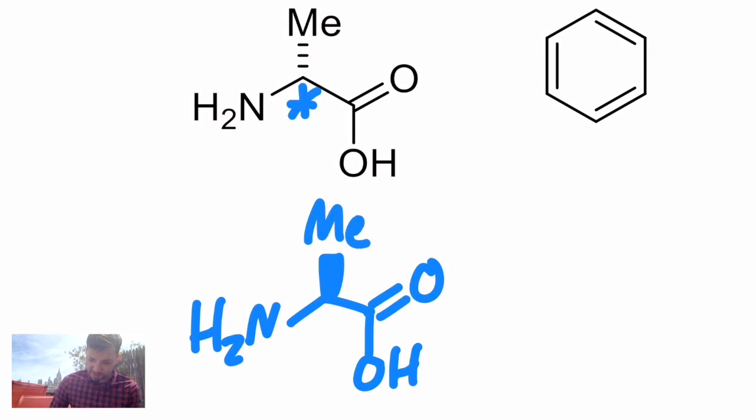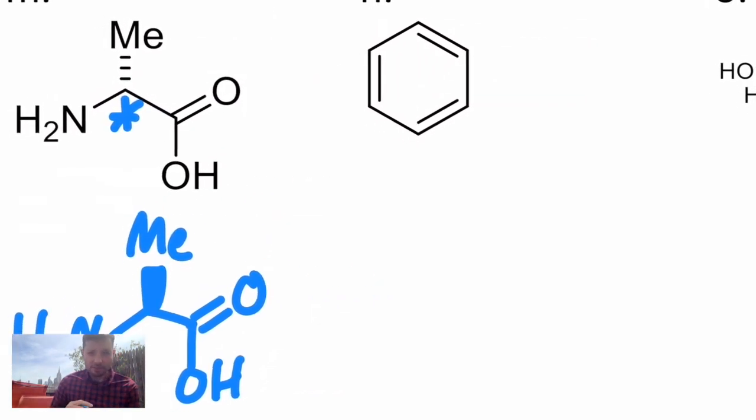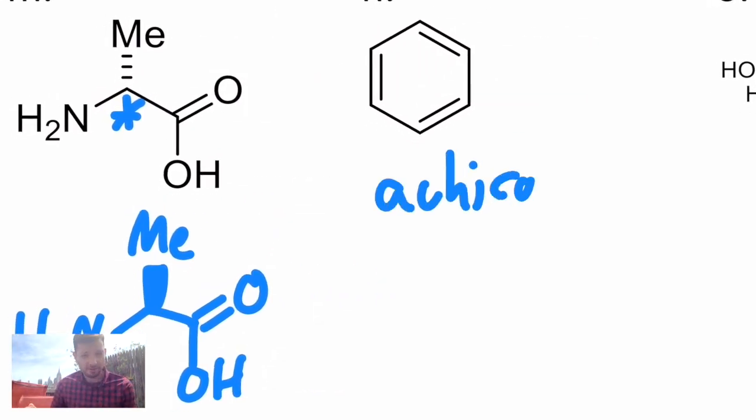Right next to it, benzene is just achiral. There's no sp3 carbons, so there's no asymmetric carbons. It has to be sp3 in order for the carbon to be asymmetric.